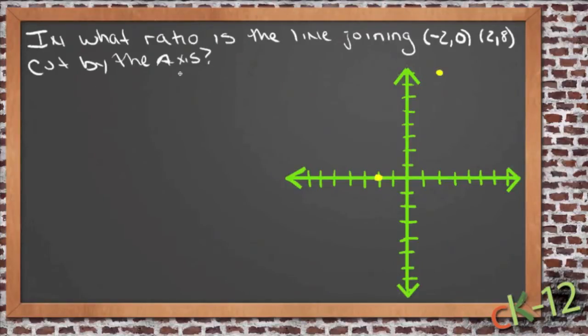cut by the axis? So if we take these two points and we draw a line between them, something like that, then we should be able to find out what ratio the part of the line above the y-axis, or to the right of the y-axis, is compared to the part of the line to the left of the y-axis. So that's our question.